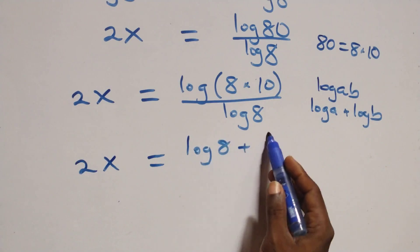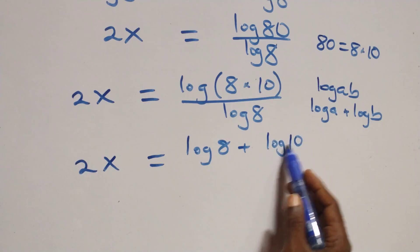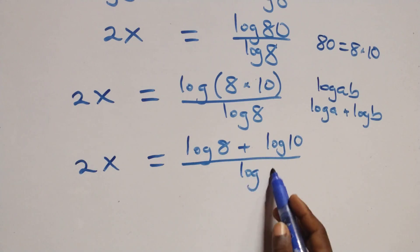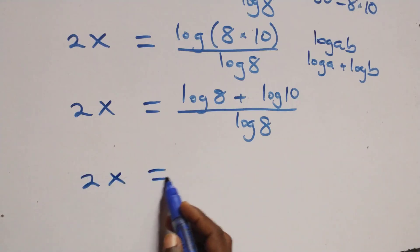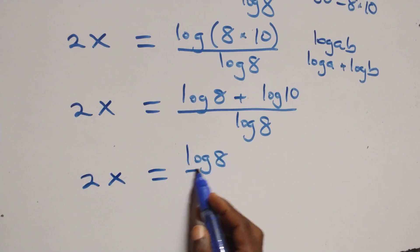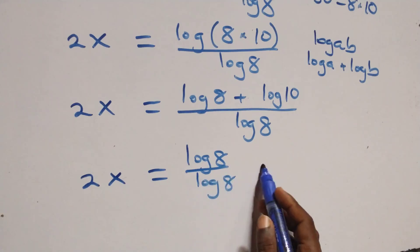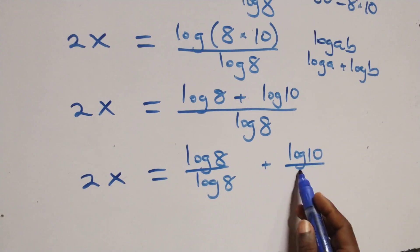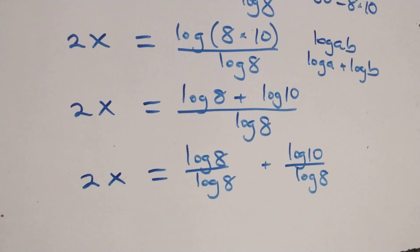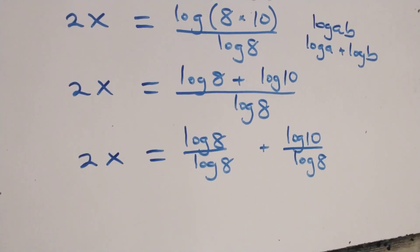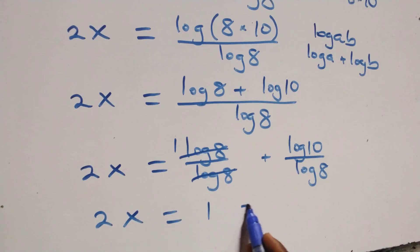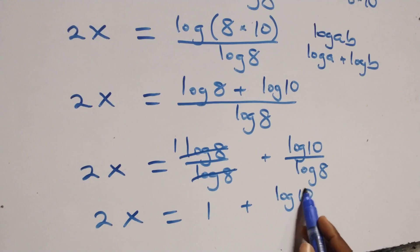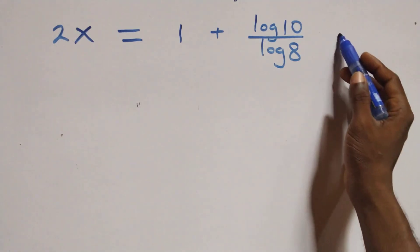So we have 2x equals to (log 8 plus log 10) over log 8. We separate this into two fractions: 2x equals to log 8 over log 8 plus log 10 over log 8. The log 8 terms cancel each other, giving 2x equals to 1 plus log 10 over log 8.